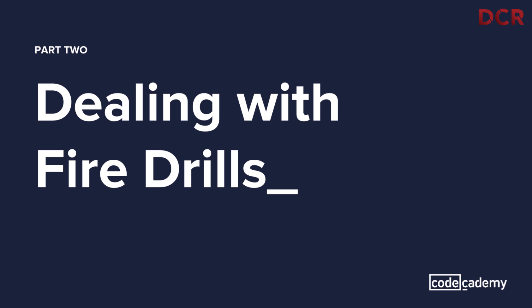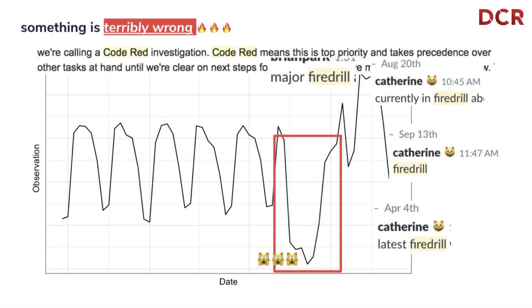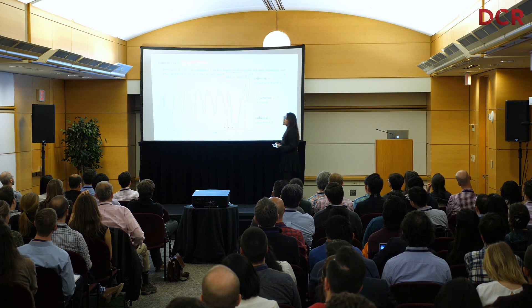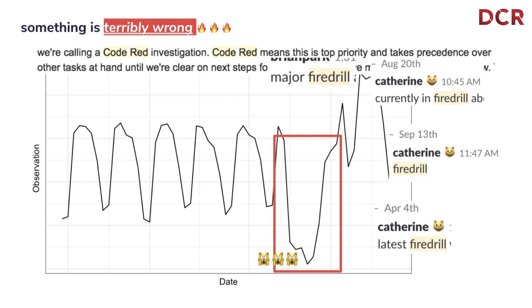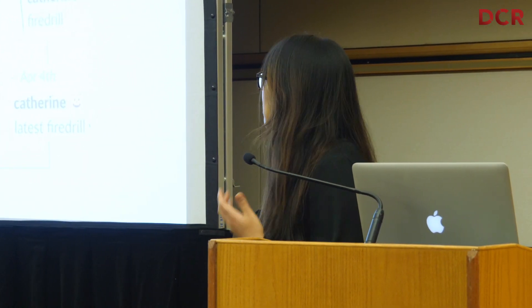So I want to switch gears and talk about dealing with fire drills at work. A lot of the time I feel like my job is like this — I joke with my product manager that we're like firefighters constantly putting out fires. These are real emails and Slack messages from work. You can see it's April, August, September — every month there's a new fire drill and something is terribly wrong. Oftentimes by the time we realize it, it's kind of too late. By the time we saw this, it was already way down, and we would have wanted to realize it much earlier.